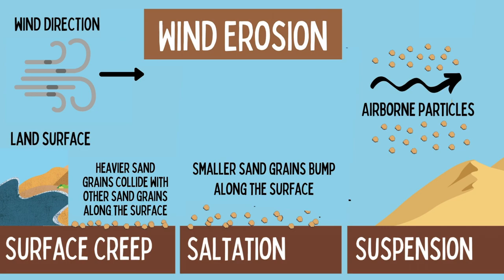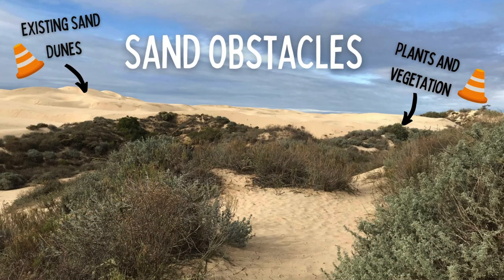Sand movement occurs through three different types of wind erosion: surface creep, saltation, and suspension. Surface creep occurs when wind pushes heavier grains across the surface — these grains are too heavy to be lifted but collide with other sand grains along the surface. Saltation makes up the largest movement of sand grains; during saltation the wind lifts grains just above the surface where they bump up and down forming ripples in the sand. The final process is suspension, when a sand grain is lifted and blown into the air, continuing to fly with the wind until hitting an obstacle such as vegetation or an existing sand dune.